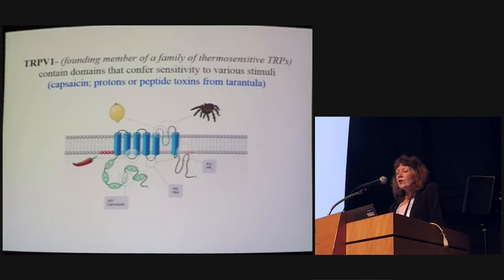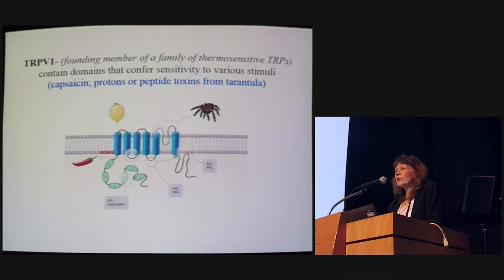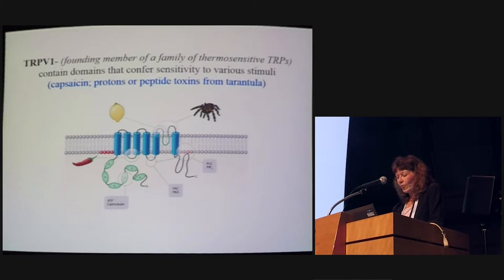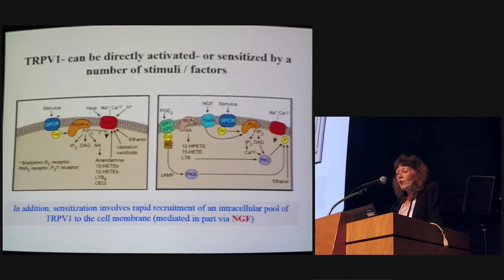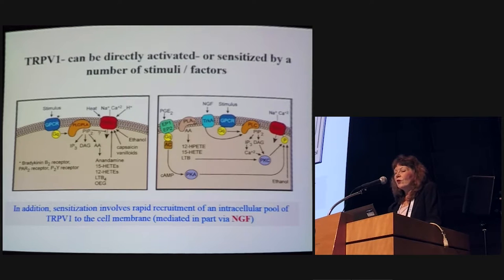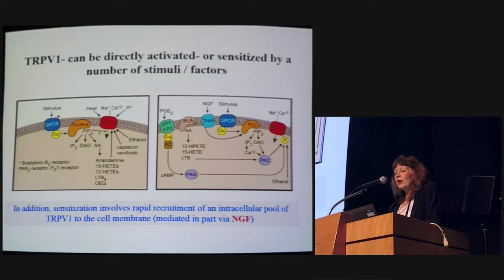TRPV1 is clearly the founding member of a family of thermo-TRPs. This channel contains domains that confer sensitivity to various stimuli, including capsaicin, RTX, protons, and even peptide toxins from the tarantula. This channel can be directly activated by a number of factors such as capsaicin, vanilloids, alcohol, anandamide, and a number of other inflammatory mediators.